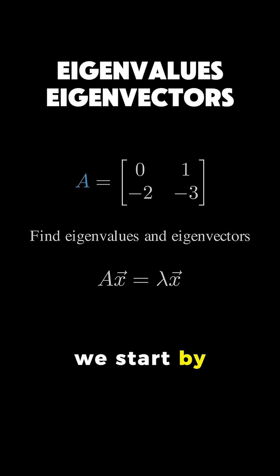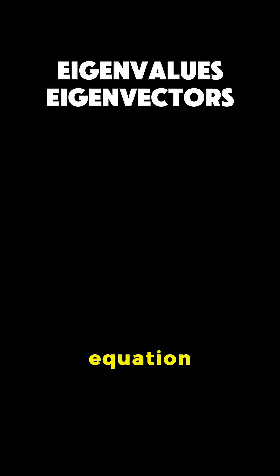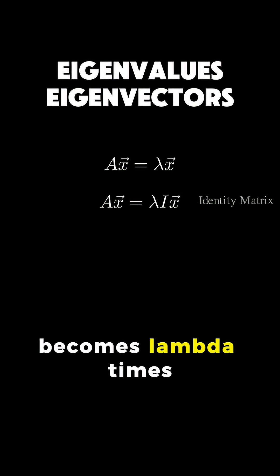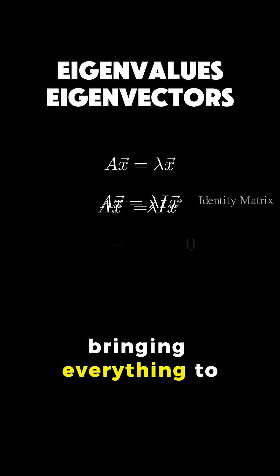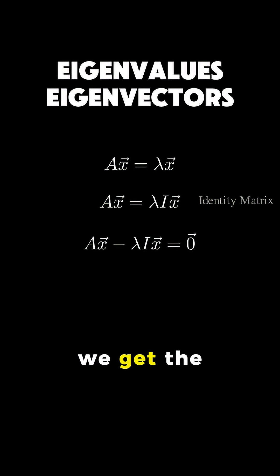We start by rearranging our definition equation. We can rewrite the right side using the identity matrix i so it becomes lambda times i times x. Bringing everything to the left side, we get the quantity A minus lambda i, all times vector x, equals the zero vector.